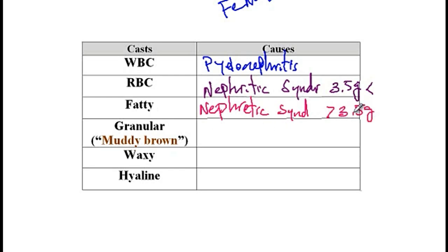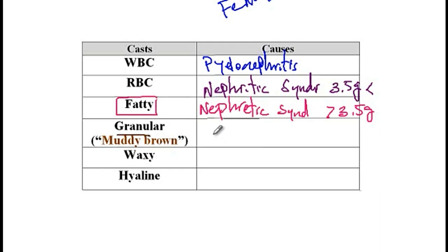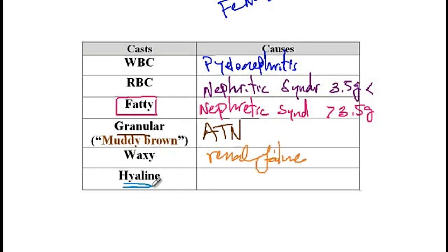Fatty casts are seen in nephrotic syndrome, where patients secrete more than 3.5 grams of protein per day. Because these patients lose a lot of protein, the liver increases lipoprotein secretion, causing lipid levels to rise and resulting in fatty casts. Granular muddy brown casts are seen with acute tubular necrosis. Waxy casts are seen with chronic renal failure. Hyaline casts are seen with exercise or dehydration.